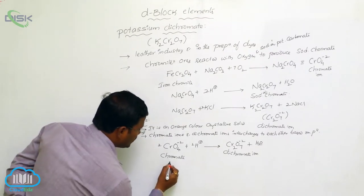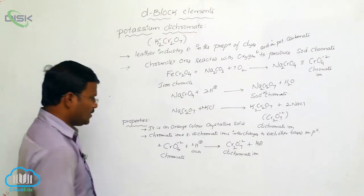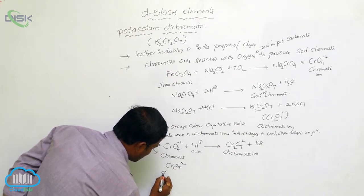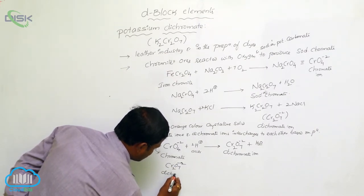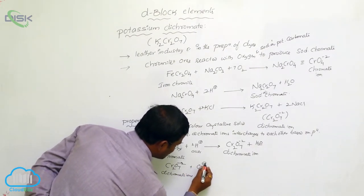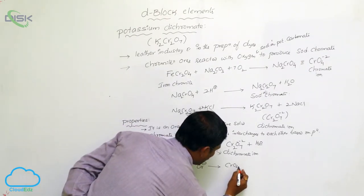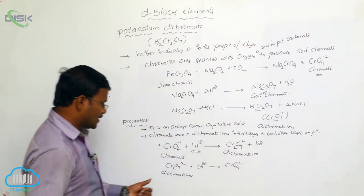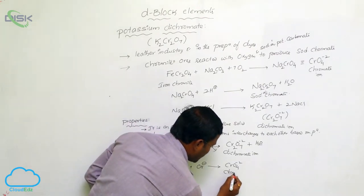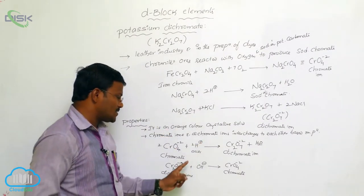Similarly, in basic condition, dichromate ions Cr₂O₇²⁻ in basic medium with OH⁻ convert into CrO₄²⁻. So dichromate ions are converted into chromate ions where the pH of the solution is above 7, that is in basic condition.